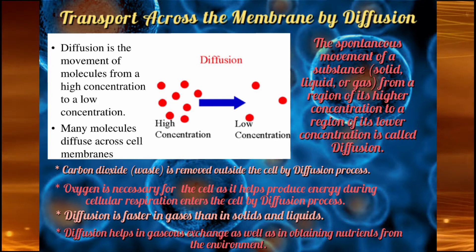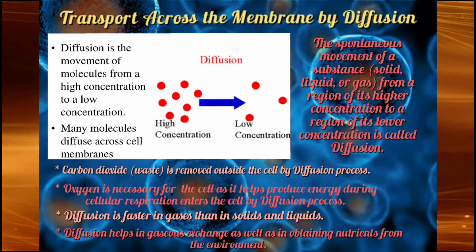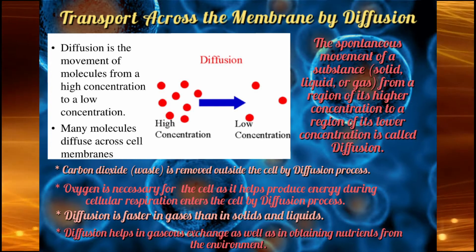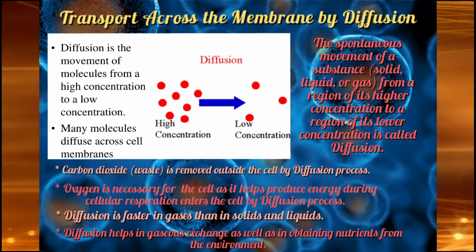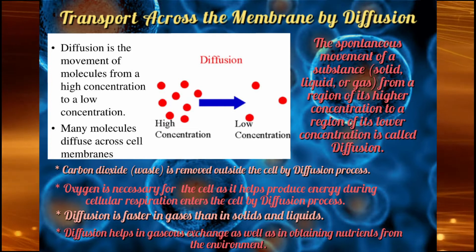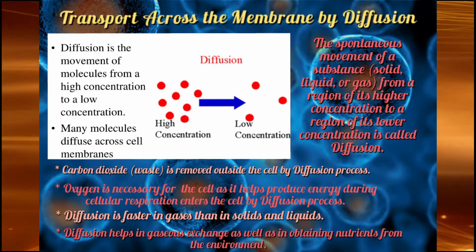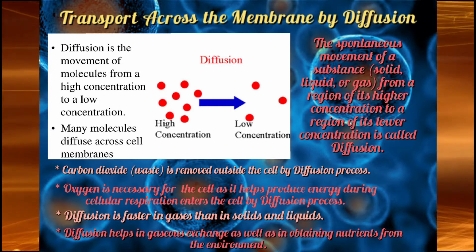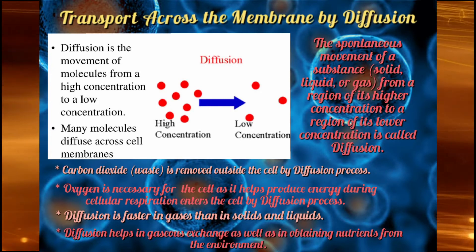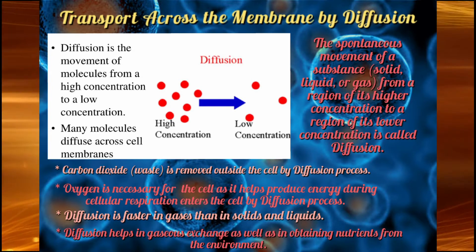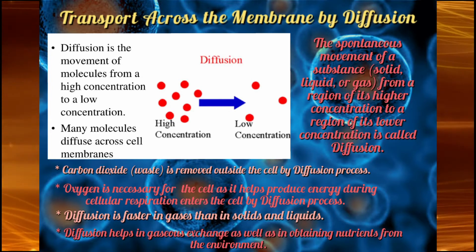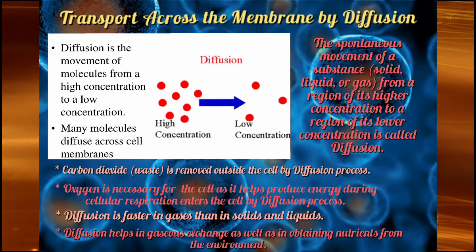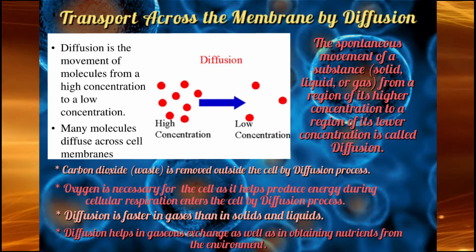Ye gaseous exchange diffusion process ki madad se hota hai. Diffusion process is faster in gases than in liquids and solids. Exchange of solids and liquids takes more time by diffusion. This diffusion process helps animal cells, plant cells, and unicellular organisms having no organ system in obtaining nutrition from the environment.